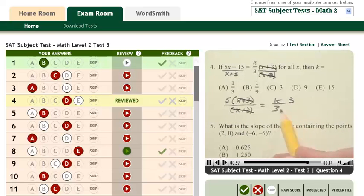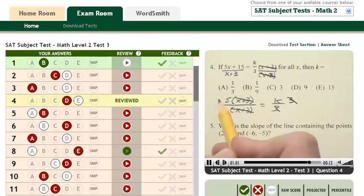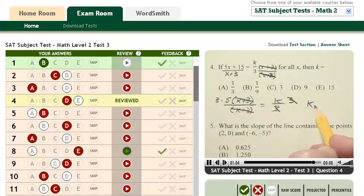To solve for k, I would multiply this side by 3 so the 3's cancel, and multiply this side by 3. My final answer would be k is equal to 15, and I see that E is 15. I would pick it quickly with confidence and move on to the next question.